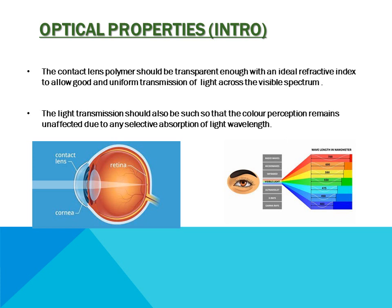So what exactly do we mean by the optical properties of contact lens? It means that the contact lens polymer should be transparent enough with an ideal refractive index to allow adequate and uniform transmission of light across the visible spectrum. The light transmission should also be such that color perception remains unaffected due to any selective absorption of light wavelength. The polymer must have an ideal refractive index considering the refractive index of the tear film and the cornea so that refraction can place light well focused on the retina, giving clear visual and color perception.